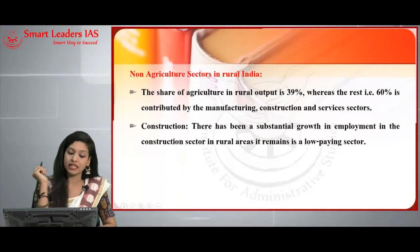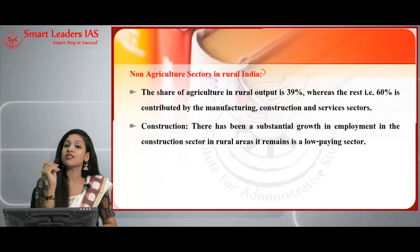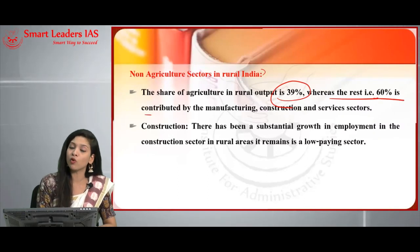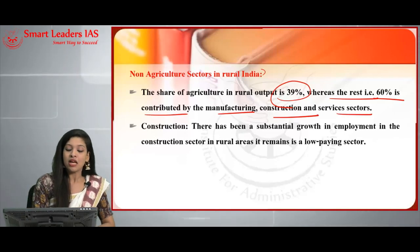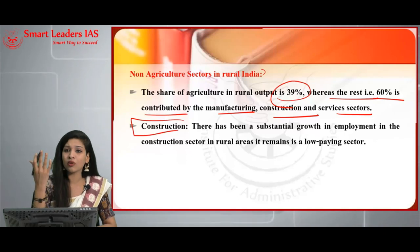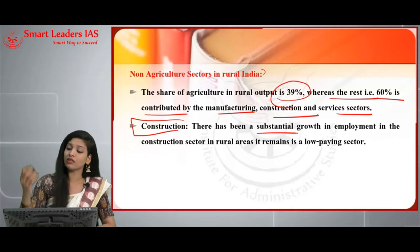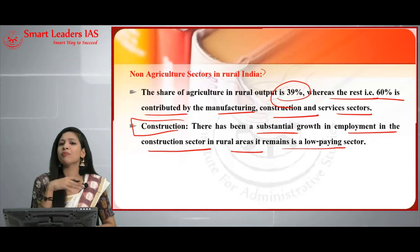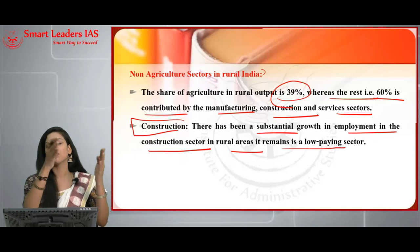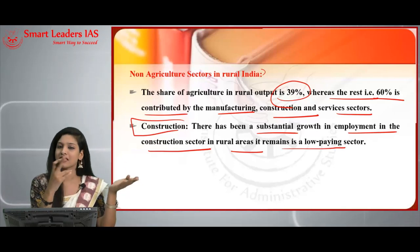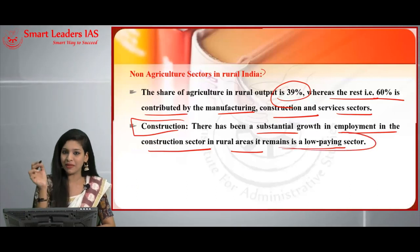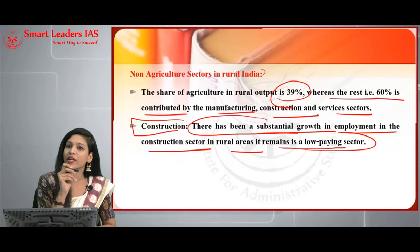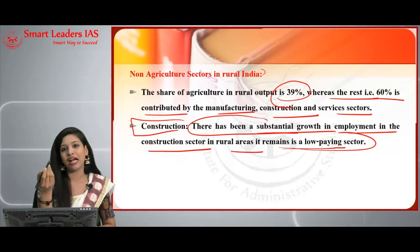Agriculture accounts for only 39% of rural output, while 60% is contributed by the manufacturing, construction, and service sectors. In the construction sector, there has been substantial growth in employment in rural areas because it remains a lower-paying sector — companies prefer rural workers for cost reasons. However, the income of rural construction workers should be increased; they should be paid a little higher to improve their living standards.